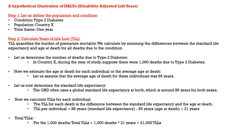It is useful to look at what is the importance of this calculation. In step 1, we first define the population and the condition — in this case, type 2 diabetes. Population is some country X and time frame is 1 year. In step 2, we first calculate the years of life lost. We want to quantify the burden of premature mortality. We calculate this by summing the differences between the standard life expectancy and age at death for all deaths due to the condition. In country X, let us say during the year of study, there were 1,000 deaths due to type 2 diabetes.